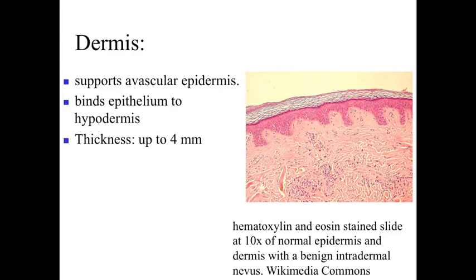If we take a look at the dermis, what we're looking at is a structure that's going to be supportive of the overlying epidermis. The epidermis is going to be a stratified squamous, a maximally keratinized stratified squamous epithelium. Like all other epithelia, our epidermis is going to be avascular, so it's dependent upon oxygen and nutrients diffusing up from the underlying connective tissue — that first region being the papillary layer of the dermis.